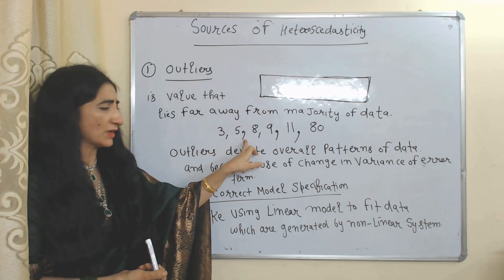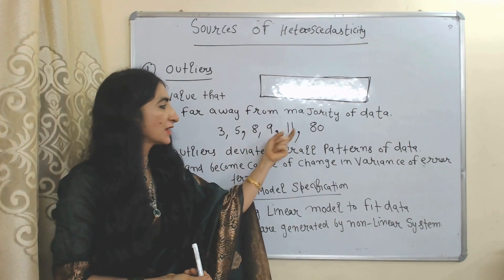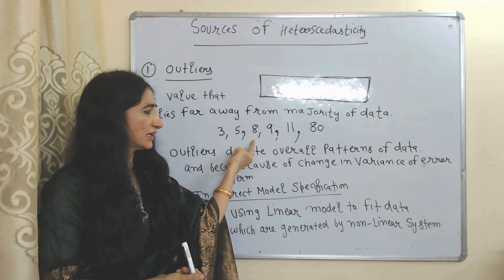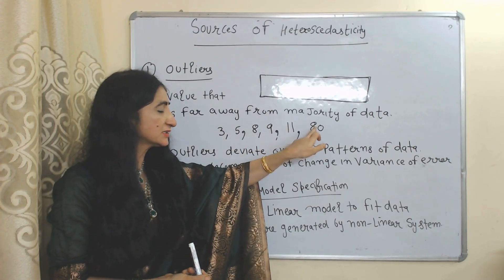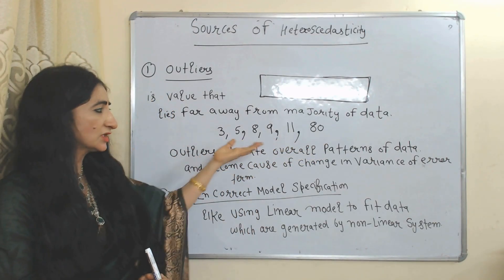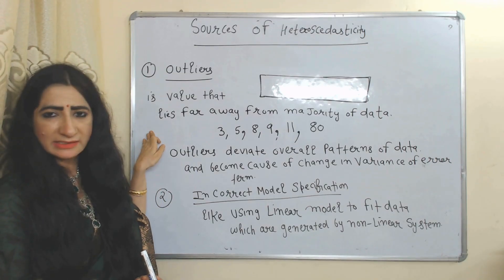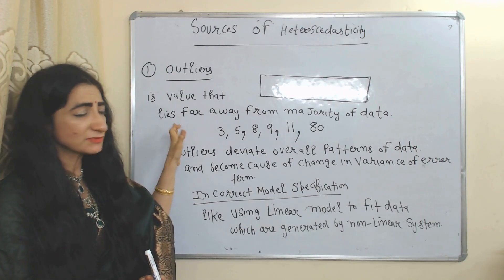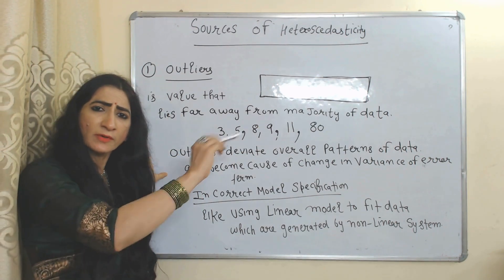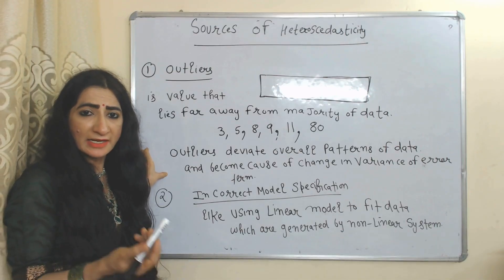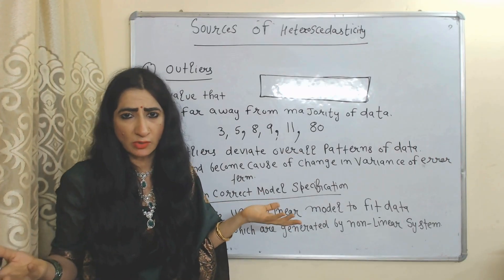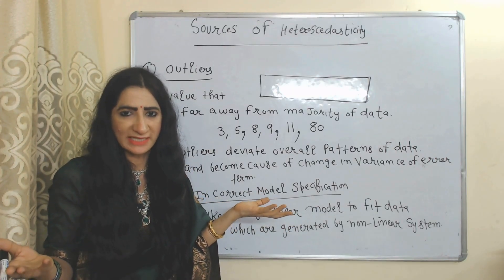Here you can see the sequence 3, 5, 8, 9, 11, and 80. All these values are close to each other, but 80 is far away from all of them — so 80 is called an outlier because it lies far away from the majority of the data. Outliers deviate the overall patterns of data, causing a change in the variance of the error term, and eventually become a source of heteroskedasticity.